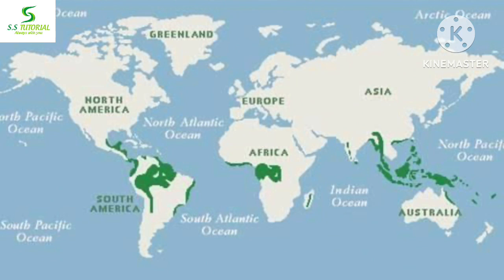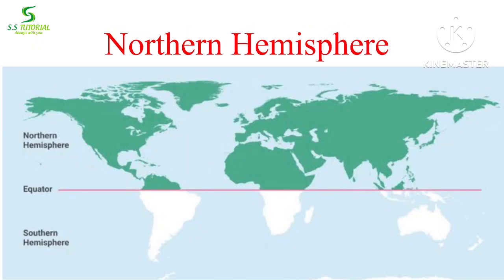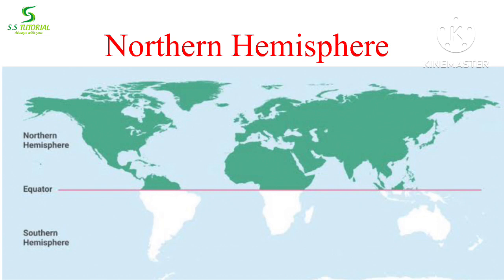In this map you can see the region where convectional rainfall occurs. Convectional rain is very much more common in the northern hemisphere compared to the southern hemisphere because there is less continent in the southern hemisphere.